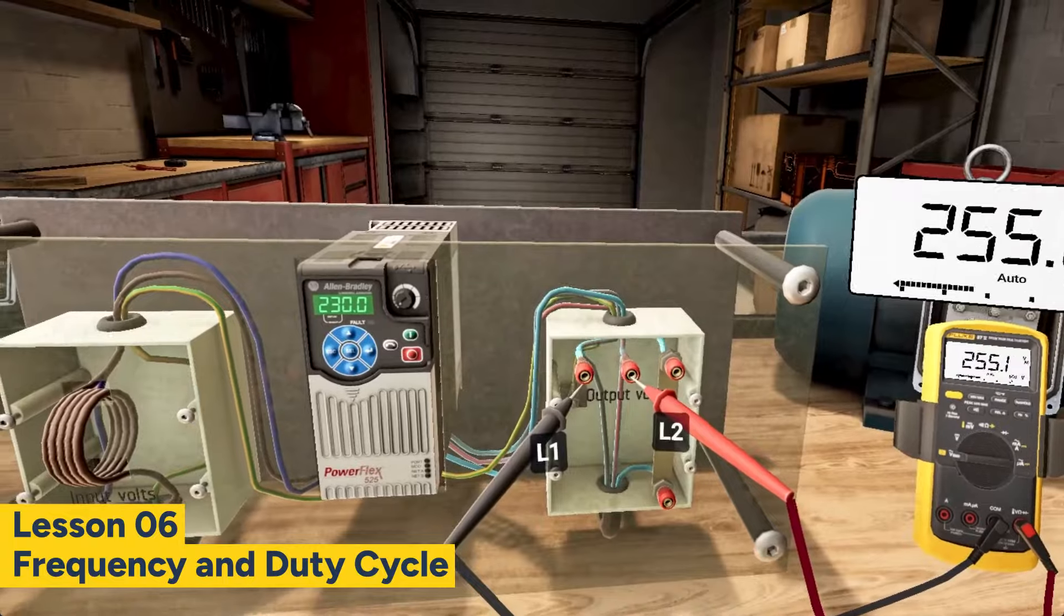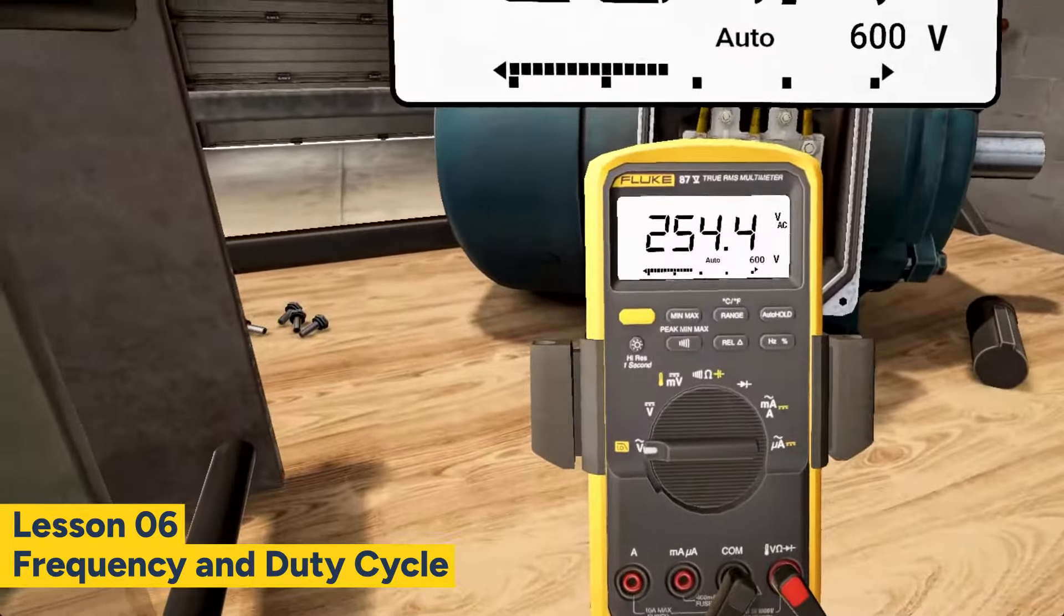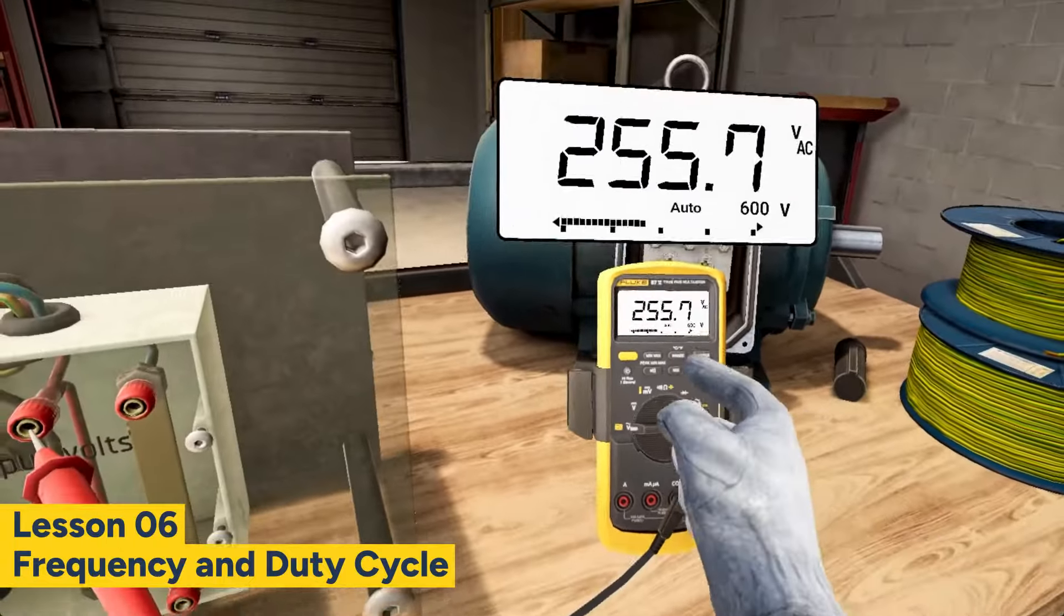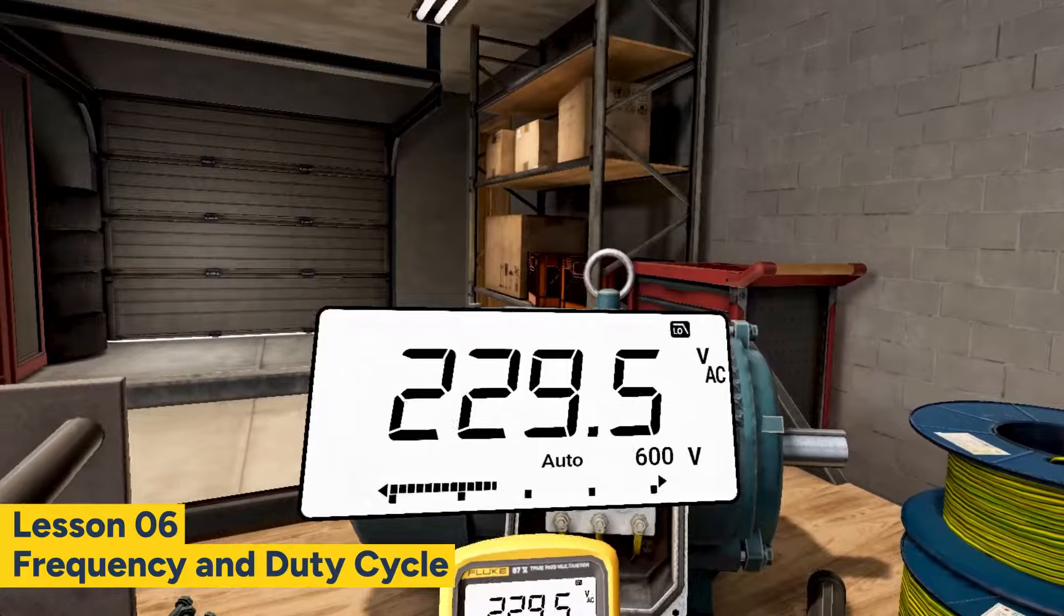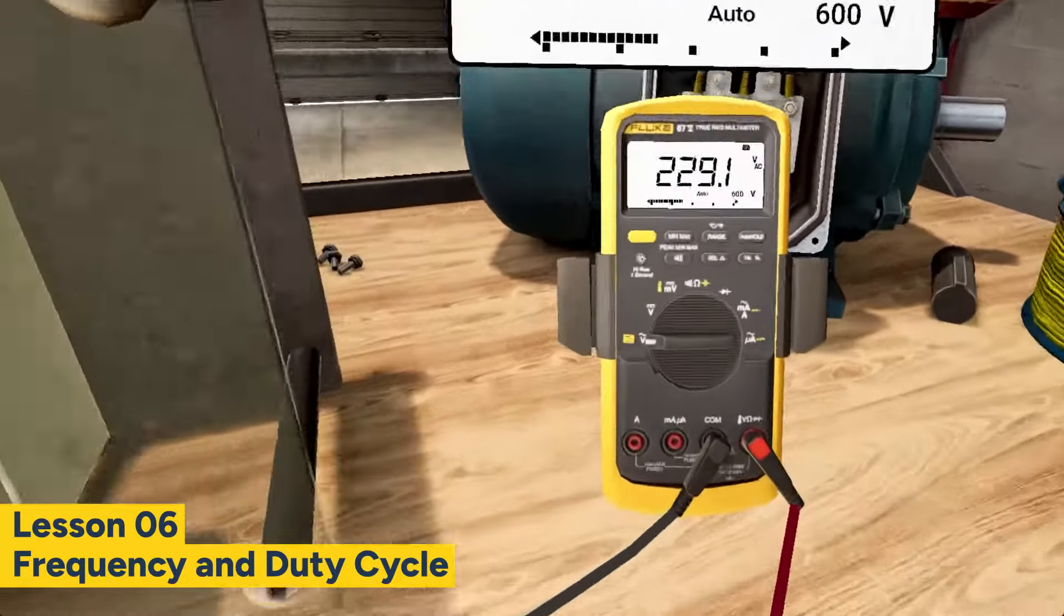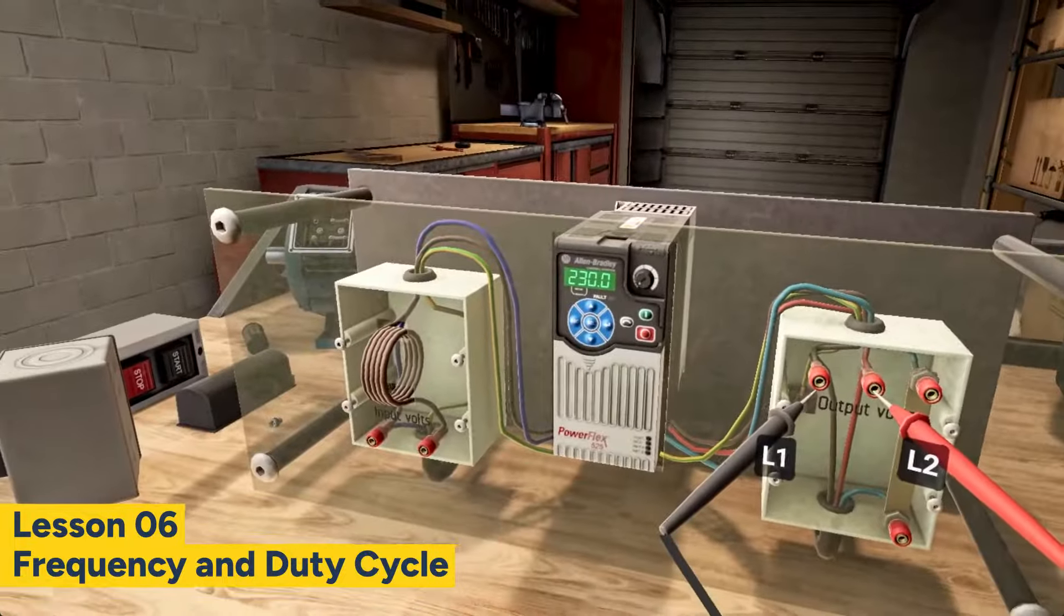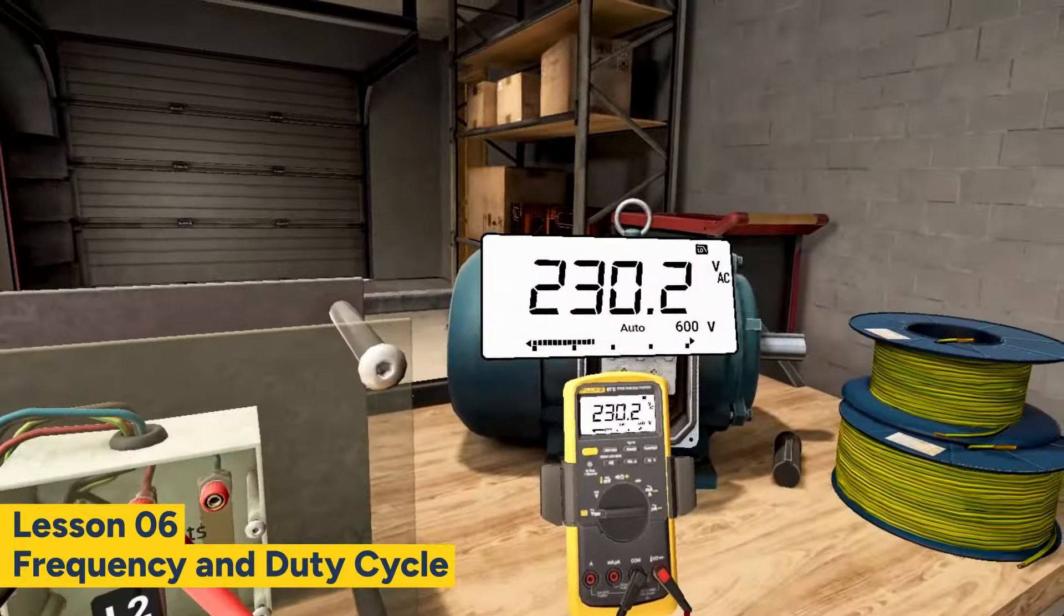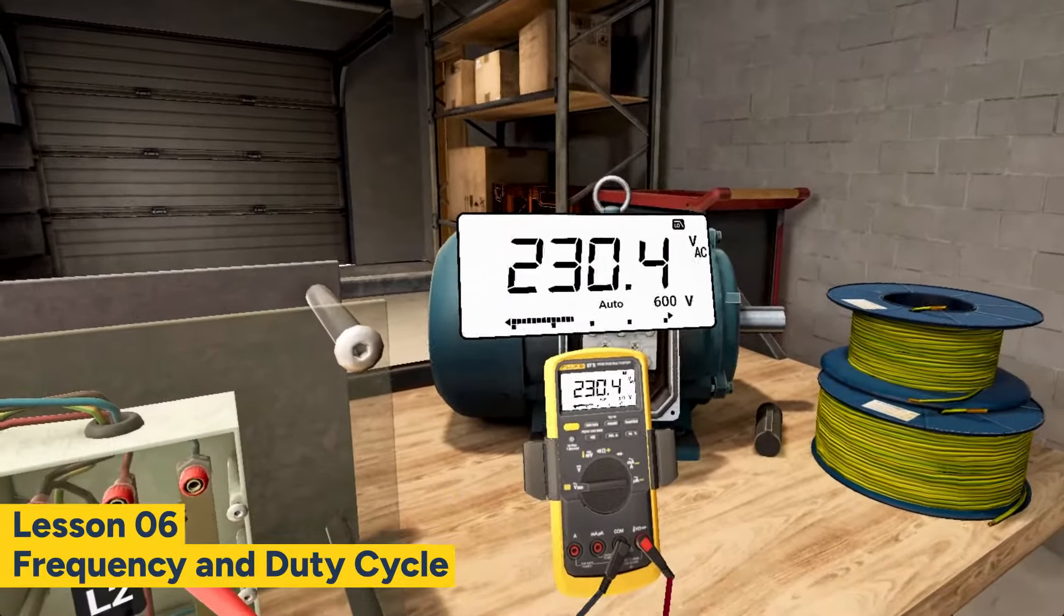To get an accurate reading, activate the low-pass function on your multimeter. Observe the reading on the display once again. The low-pass function filters out high-frequency noise and interference, allowing the multimeter to accurately capture the fundamental value of the PWM signal. This is why the new measurement is more representative of the actual voltage.